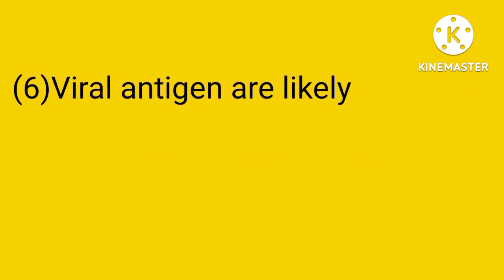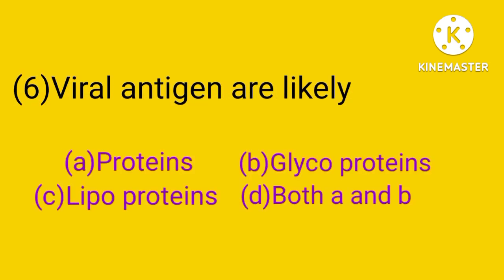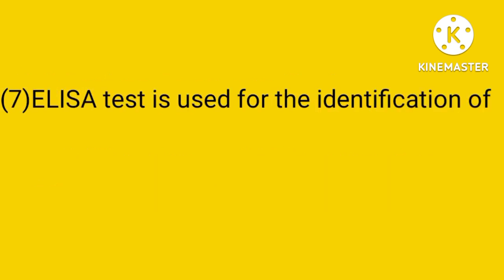Number 6. Viral antigens are likely: proteins, glycoproteins, lipoproteins, or both A and B. The answer is A. Viral antigens are likely proteins, and they are encoded by the viral genome.